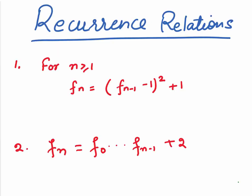Let's look at some recurrence relations. We can always generate Fermat's numbers using them. Look at the first one. For n greater than equal to 1, Fn is nothing but F of n minus 1 minus 1 whole square plus 1.